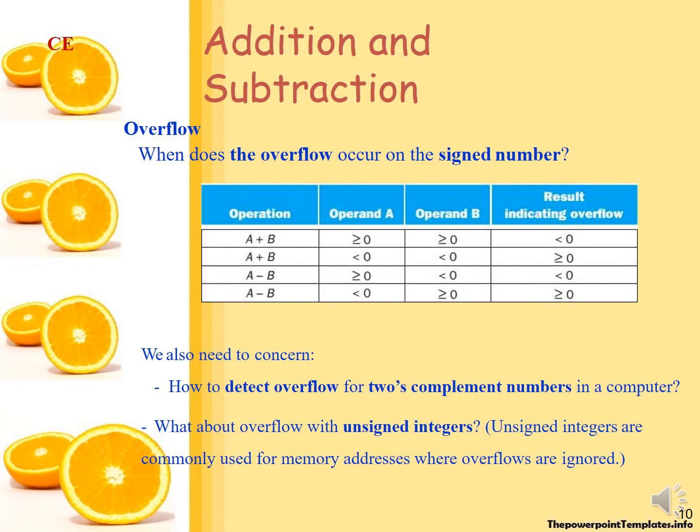Addition and subtraction can produce overflow. A plus B greater than 0, the result indicates overflow. A plus B less than or equal to 0, or greater than or equal to 0, indicates overflow.